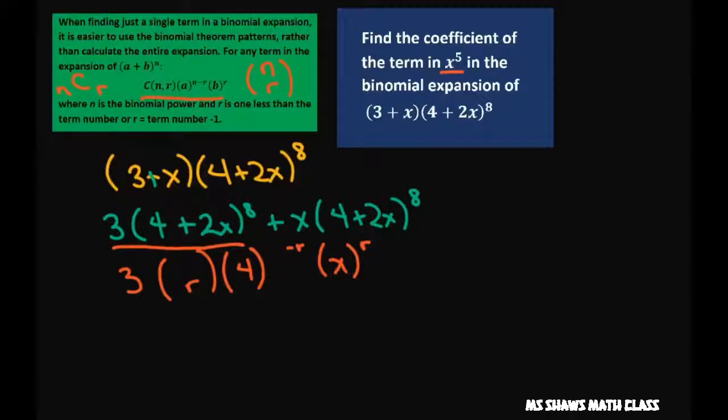My n is 8, so let me put the 8's in here. 8 choose r, this is 8 and we don't know r. Since this is the only x I have and we want x to the fifth, I know that r equals 5. So this one r is 5.